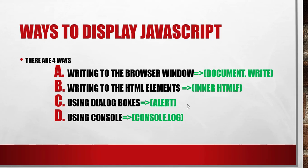Welcome to the JavaScript tutorial video series. In today's tutorial, I'm going to teach you the different ways of outputting JavaScript. There are four ways: the first is writing to the browser window using document.write, the second is writing to the HTML element using innerHTML, the third is using dialog boxes with alert, and the fourth is using the console with console.log.